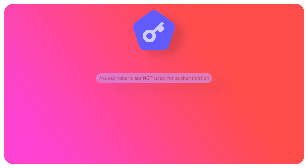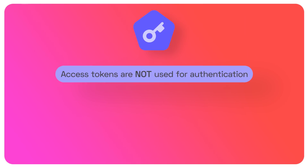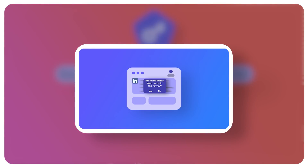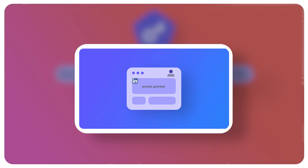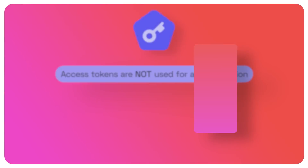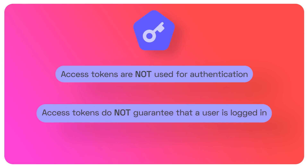On the flip side, access tokens are not used for authentication. Based on an access token, you can't actually make any assumption about the user's identity or the fact that they're logged in. Think about it: if I logged into LinkedIn, go to Twitter, do the redirect, get the access token, and then log out of Twitter — that access token is still valid and can still be used. So the access token itself doesn't actually guarantee that a user is logged in at all.